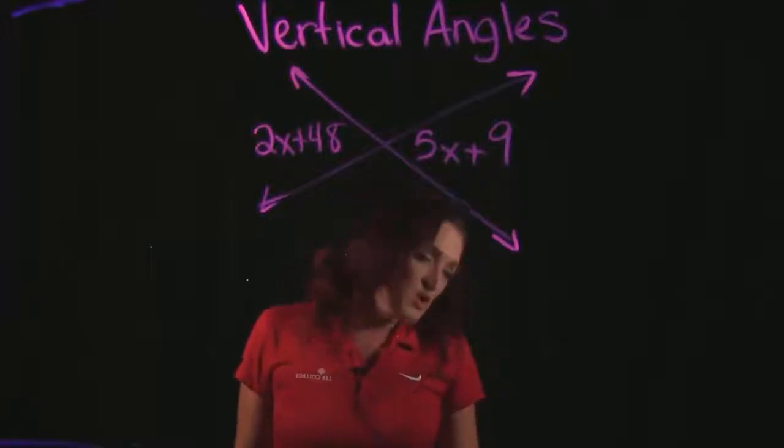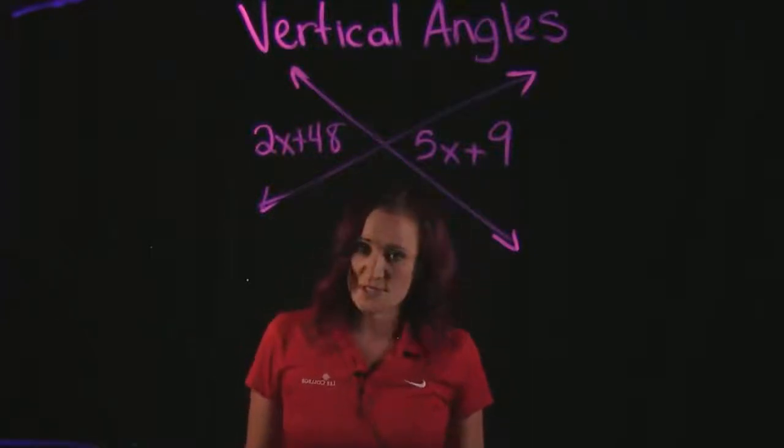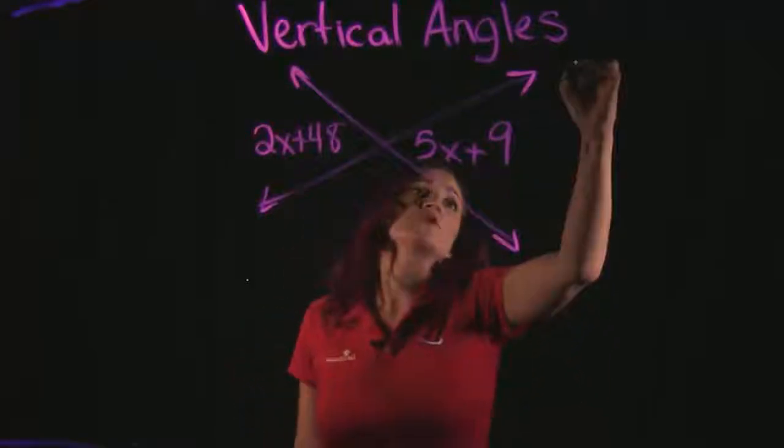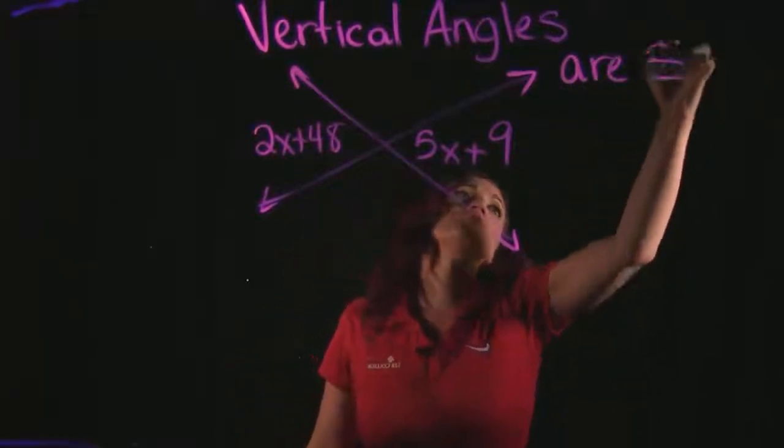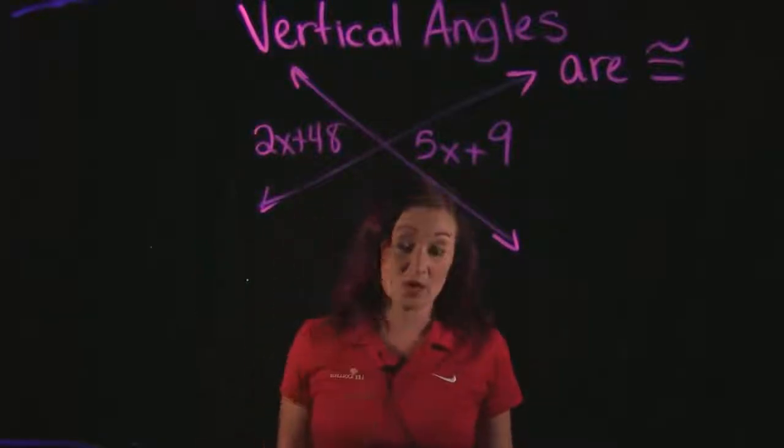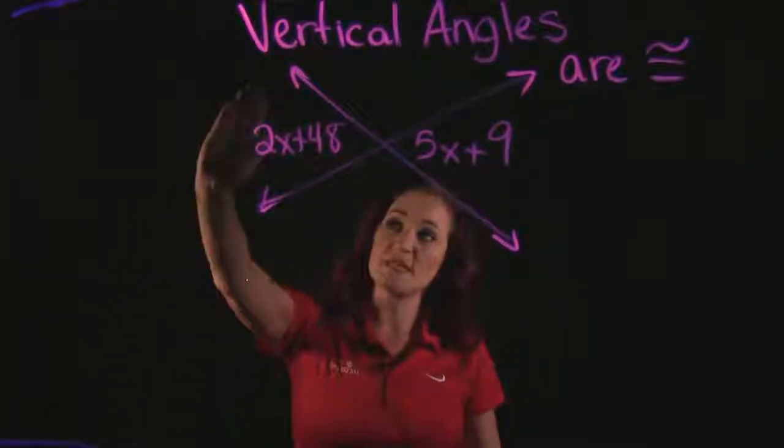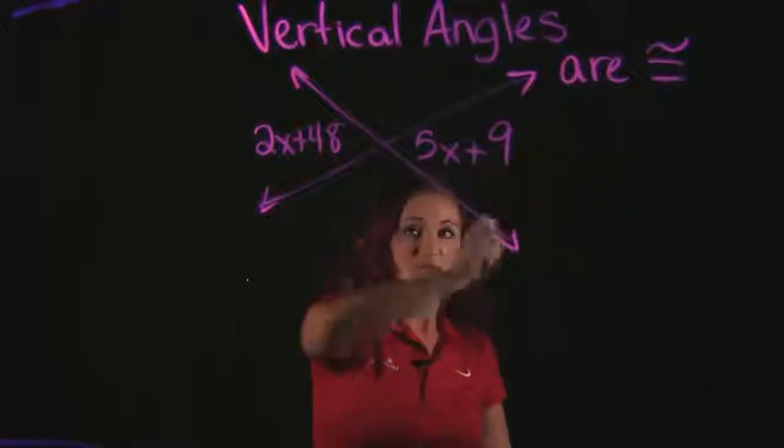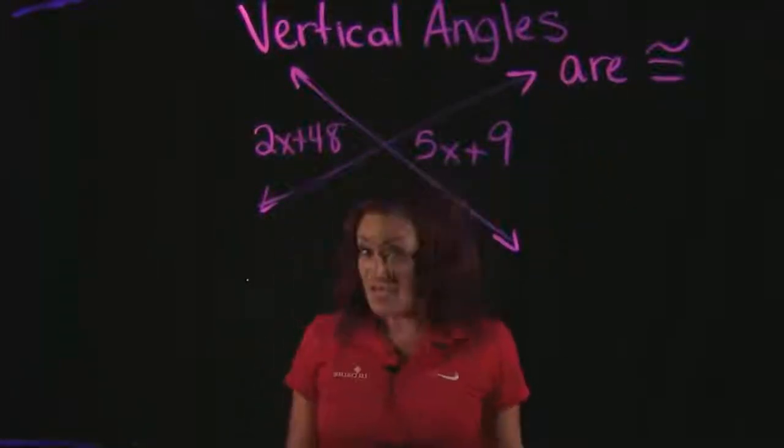And what we need to know about vertical angles to help us solve this problem is that vertical angles are congruent to each other, which is just another way of saying that they equal each other. So whatever this angle is, so is this one. Same thing for the top and bottom. They equal each other.